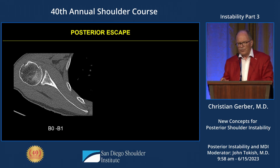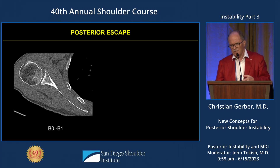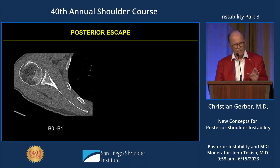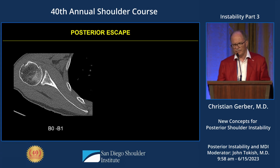This is a typical case of a B0 glenoid. I would really like that at the end of this talk you understand that this terminology has hurt us very much. Because this is not a B1 or B0 glenoid, but a B0 or B1 scapula. And if we do not think scapula, we will not solve the problem.